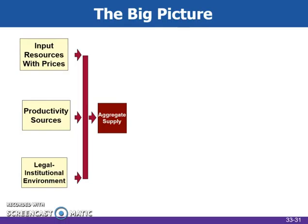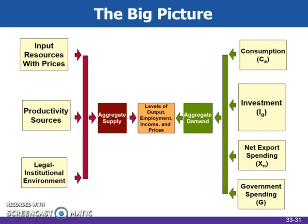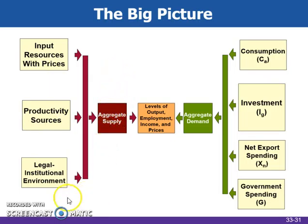This figure illustrates the many concepts covered up to this point and how they relate to one another. On the left-hand side, we have everything that has impacted aggregate supply — the factors of production: land, labor, and capital, both their quantity and quality, as well as technology, fiscal policy, and the legal-institutional environment and regulations. On the right side, we have everything that impacts aggregate demand, represented by the expenditure equation for GDP: C plus I plus G plus X minus M.